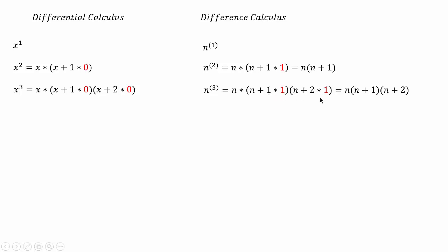The steps increase from 1 to 2, but the difference is of unit length, so 1 is kept constant everywhere. This results in n times (n+1) times (n+2). From now onwards, whenever I use a parenthesis in the power, we are referring to difference calculus. We can generalize this relation for any power, like n to the 4th or n to the 5th with parenthesis, and so on.